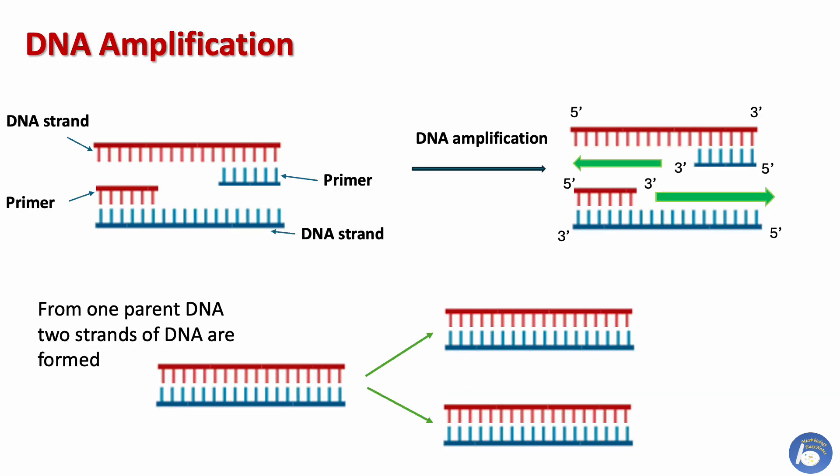This diagram shows how with the help of primers, DNA can be amplified. First, the primer binds at the primer binding site. Then after one step of the amplification technique, we get two strands of DNA from one parent DNA.